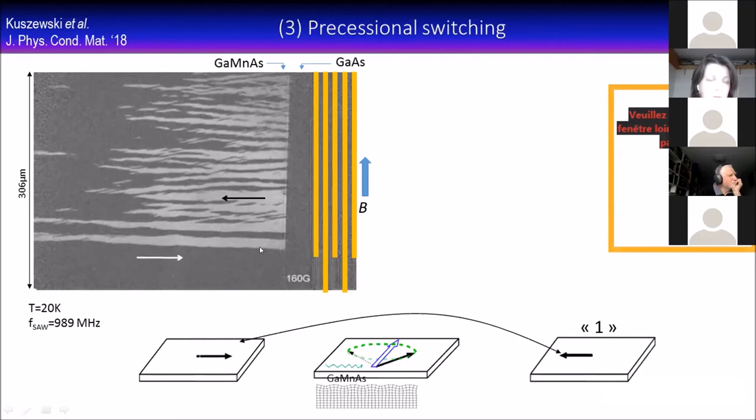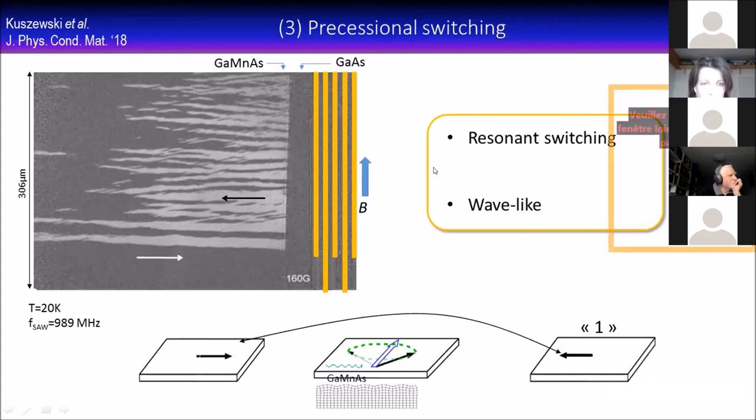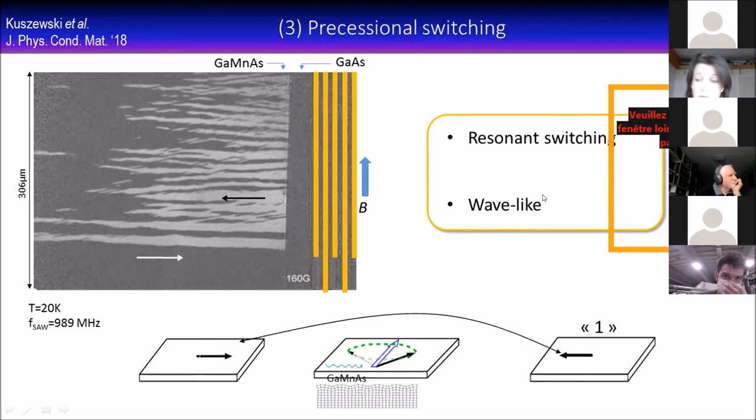This we were able to reproduce very nicely with micromagnetic simulations. They basically come from the non-homogeneity of the magnetoelastic constant. Once again, if you go to the other transducer, it's equally efficient. We have resonant switching. We were able to correlate the efficiency of the switching with how much the SAW has been absorbed, demonstrating the resonant nature of the switching.